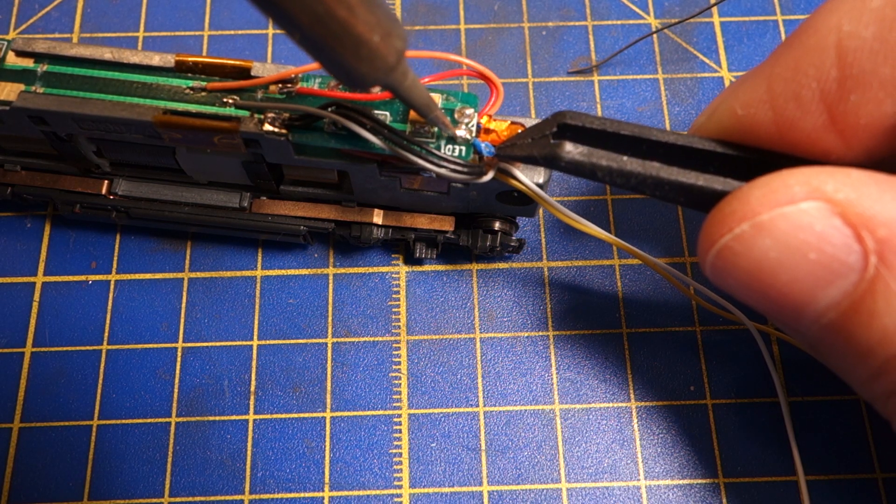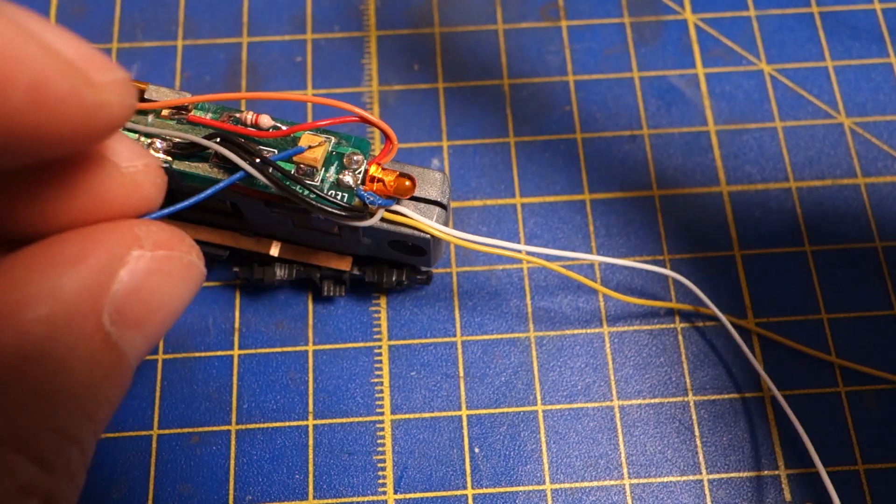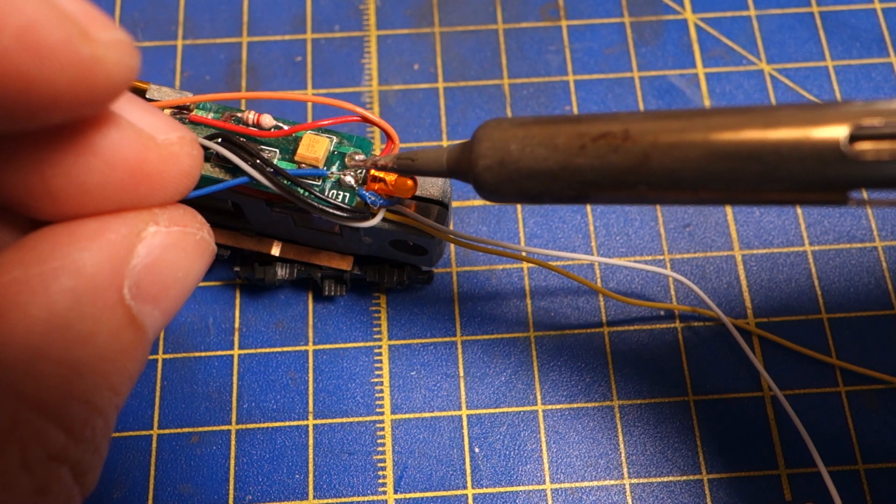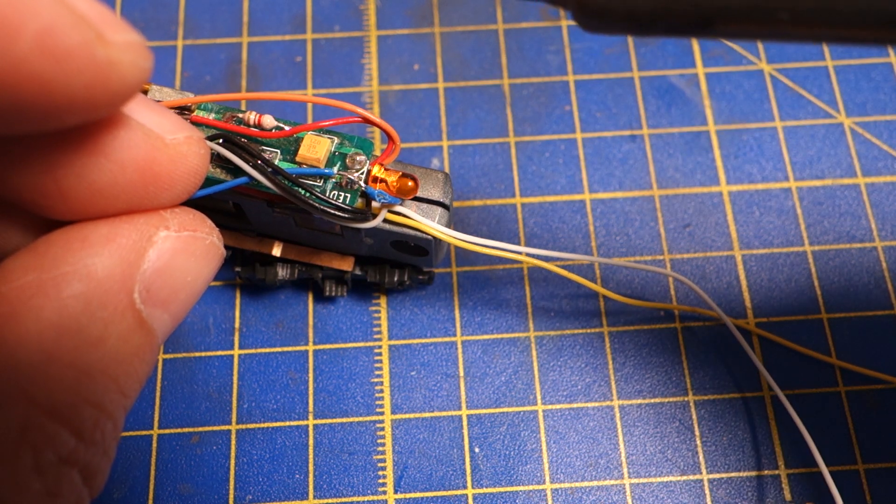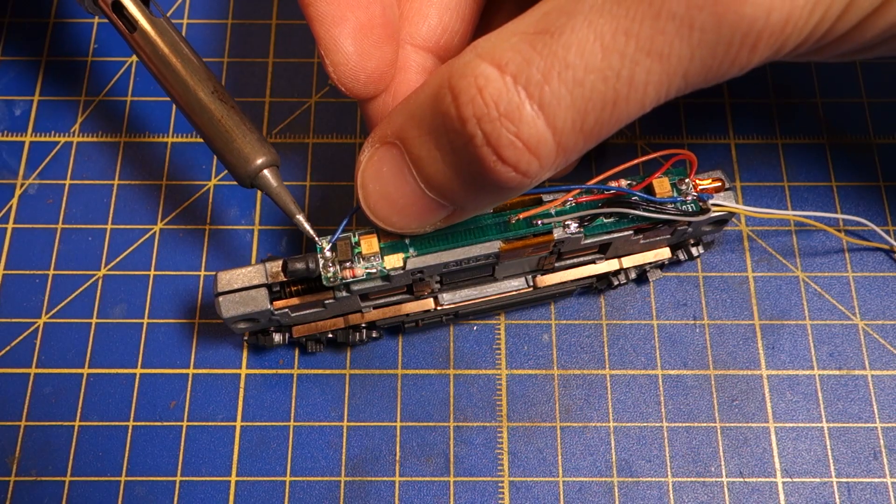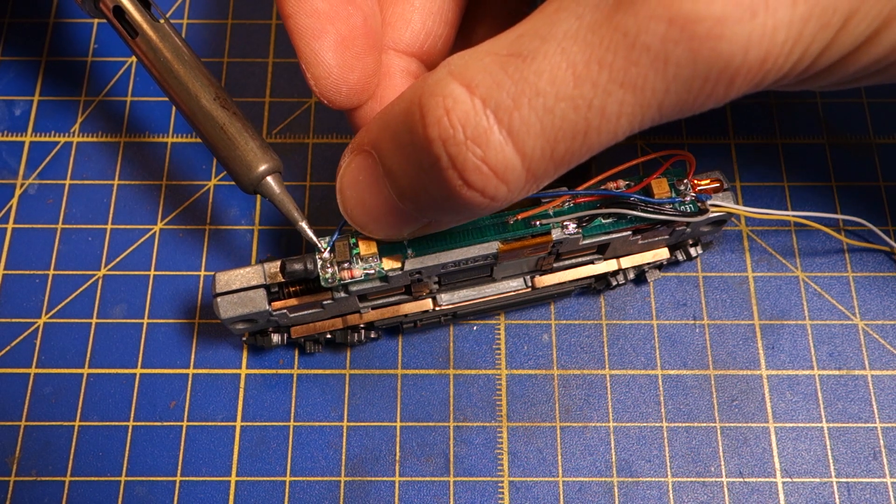Most decoders, including this one, have the common plus pole on the blue wire, so the blue wire goes to the anode. Since the decoder is sitting right next to the rear light, I have a lot of the blue wire left over, so I use that as a jumper wire to the anode of the front headlight.